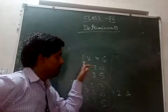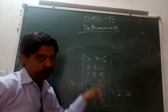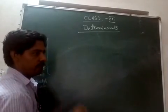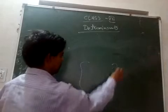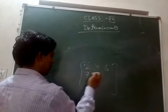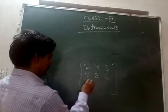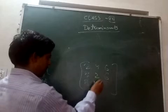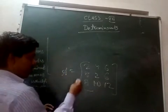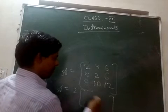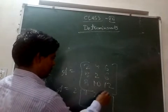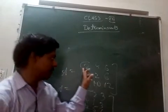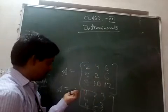In a matrix, unlike a determinant, you cannot take a common factor from just one row — it must be common to every element of the entire matrix. For example, in the matrix 2 4 6 / 7 8 2 / 6 8 10 / 15 8 10 12, if you take 2 common, it factors from every element.